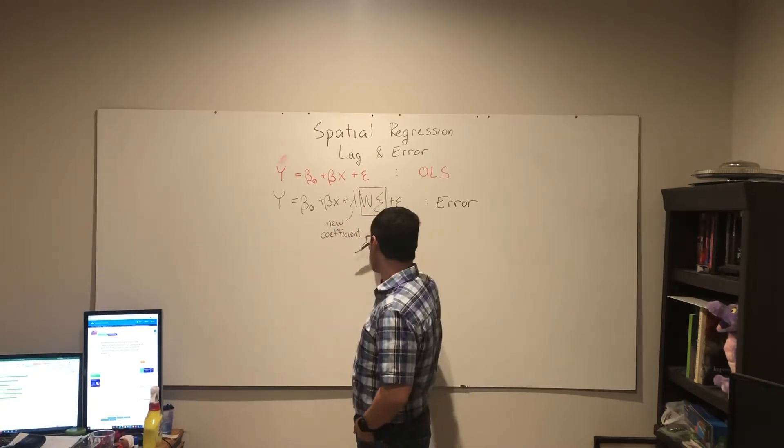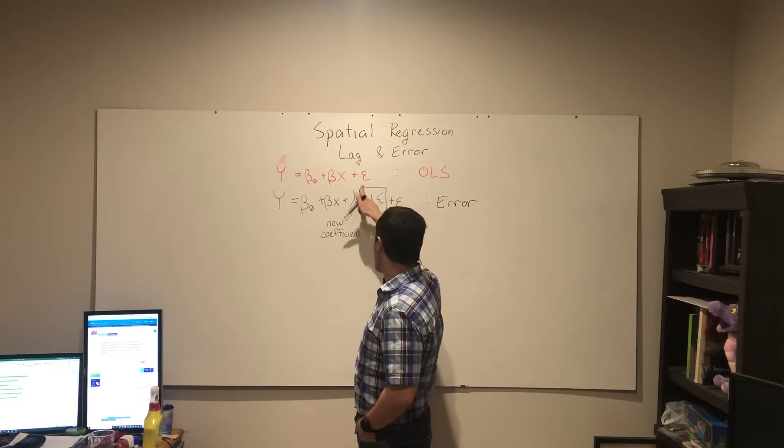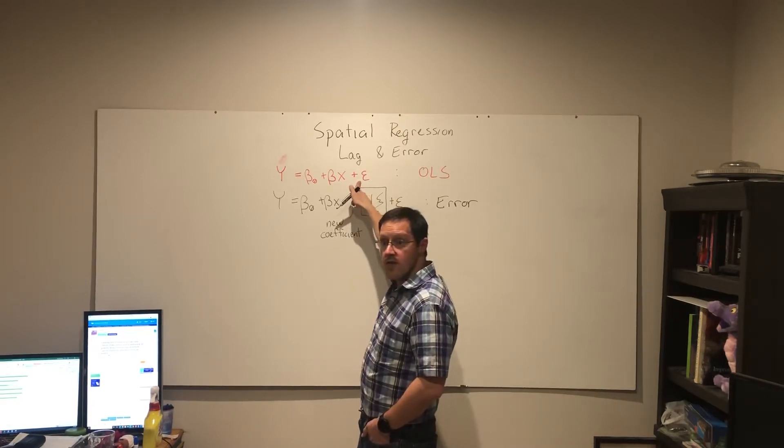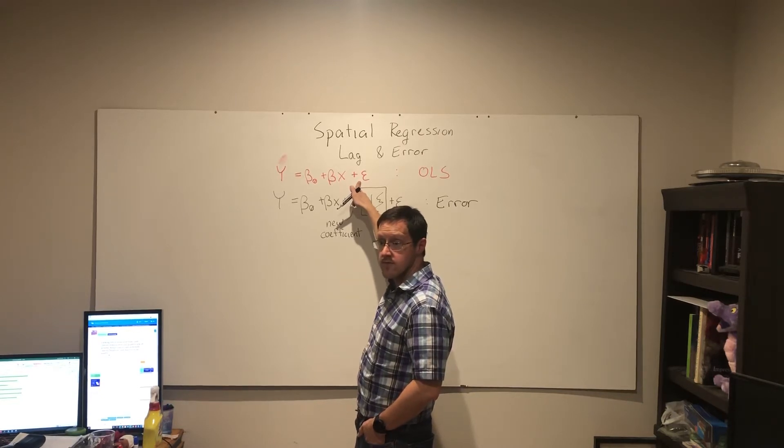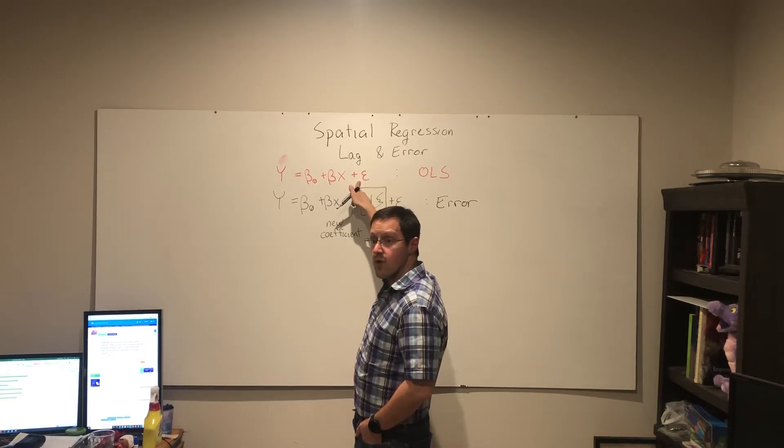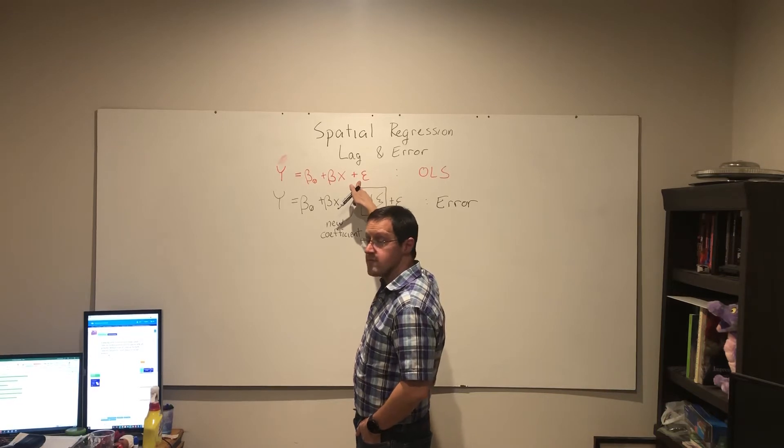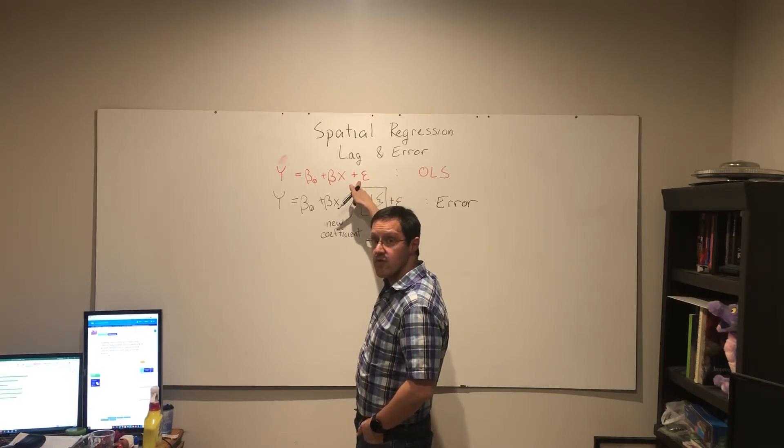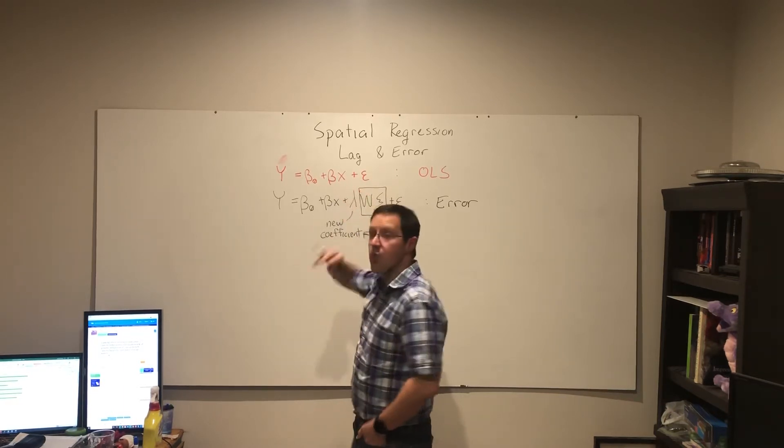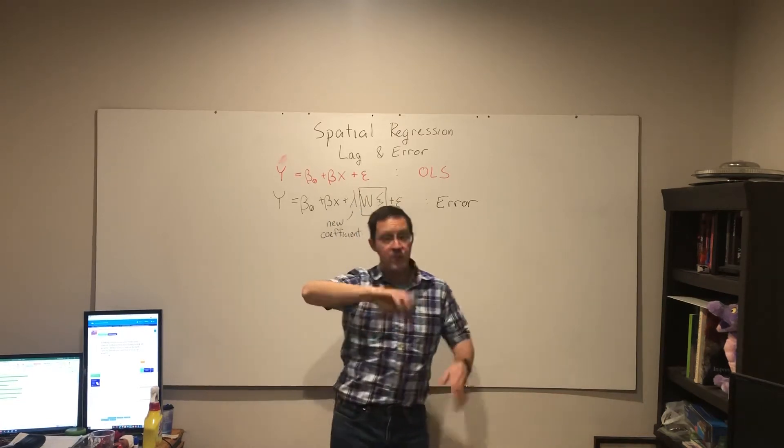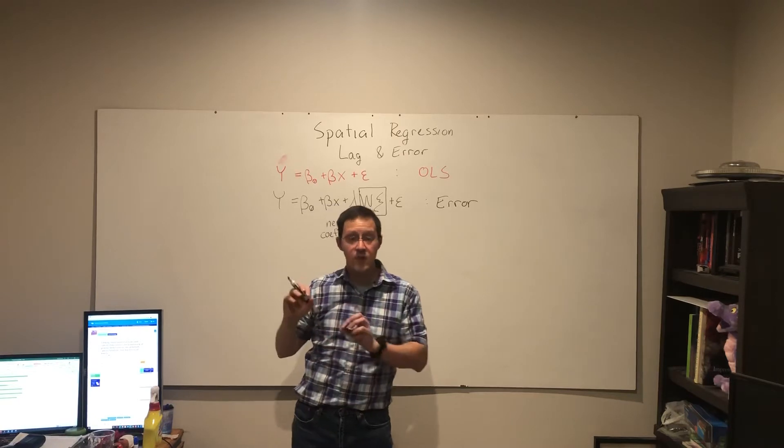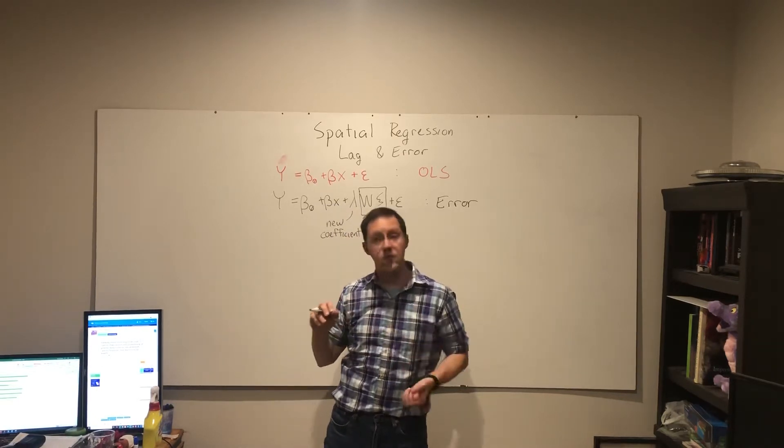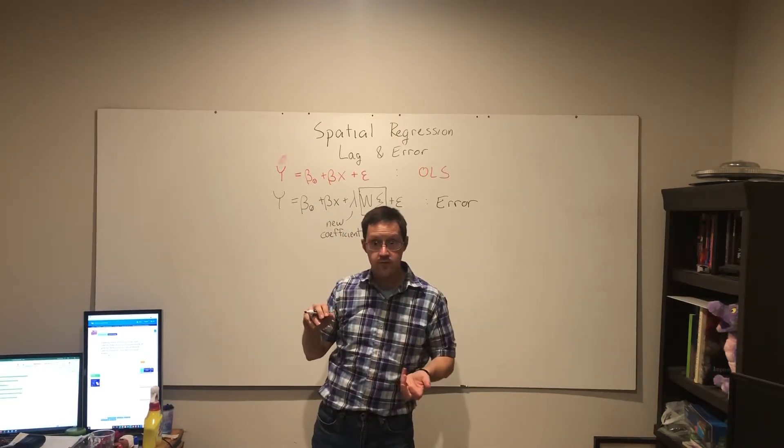This extra term says our errors, we found that they were spatially autocorrelated. So what we're going to do is break this error into two parts. One part is the spatially autocorrelated component. The other part is the not autocorrelated residuals.